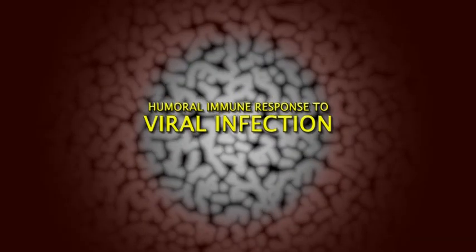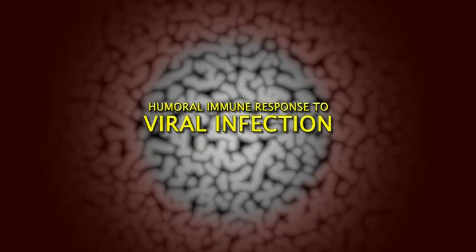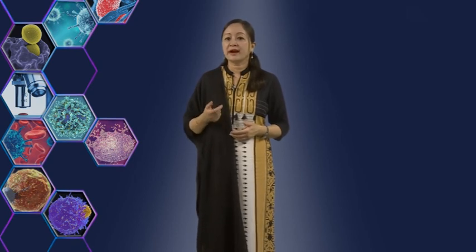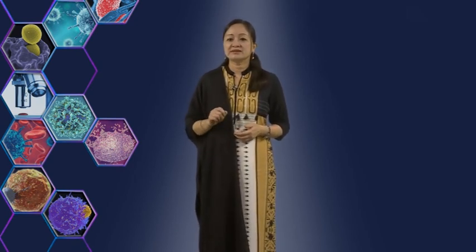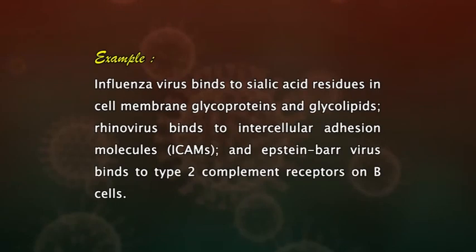Humoral immune response to viral infection. Most viruses express molecules that will bind to cell surface molecules in the host cell. This helps in the attachment of viruses to the host cells. For example, influenza virus binds to sialic acid residues in cell membrane glycoproteins and glycolipids. Rhinovirus binds to intercellular adhesion molecules or ICAMs. And Epstein-Barr virus binds to type 2 complement receptors on B cells.